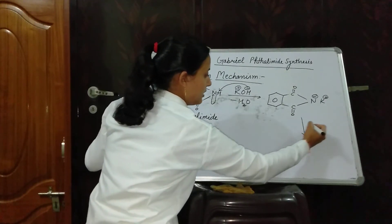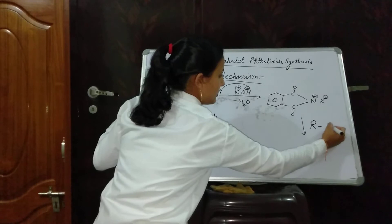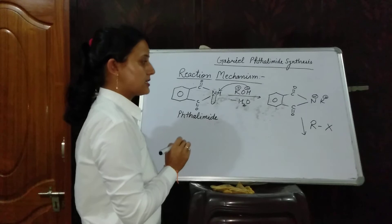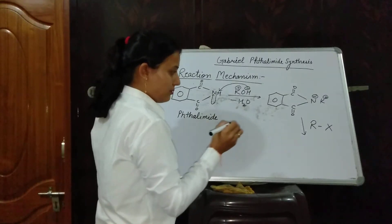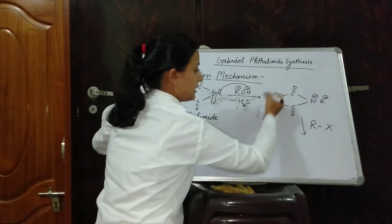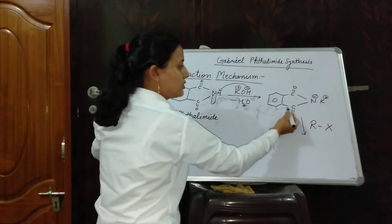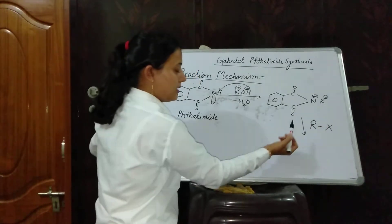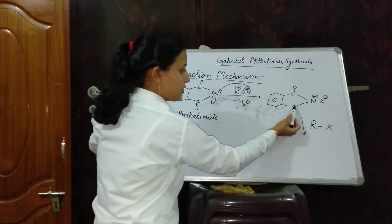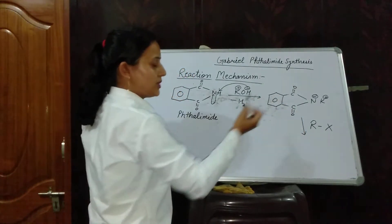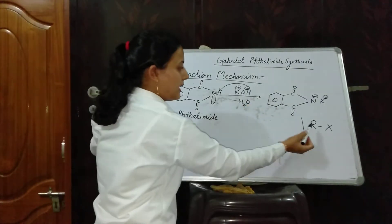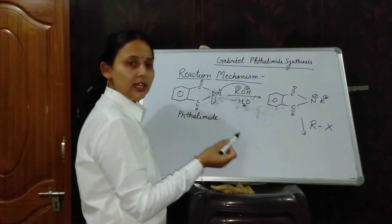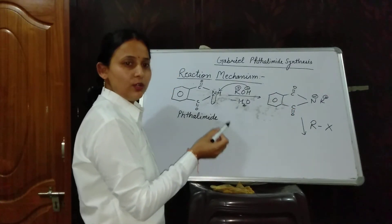When this potassium salt is treated with RX — alkyl halide — this is the exclusive step of Gabriel Phthalimide synthesis. This is an intermediate or salt-type product. RX means alkyl halide, and this reaction undergoes nucleophilic substitution (SN reaction). If we take aryl halide instead, the reaction will not continue. That is why aniline cannot be formed during this reaction.